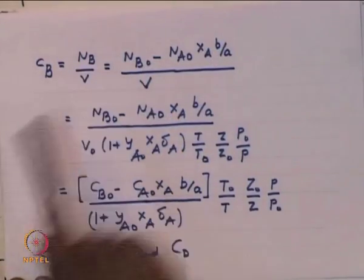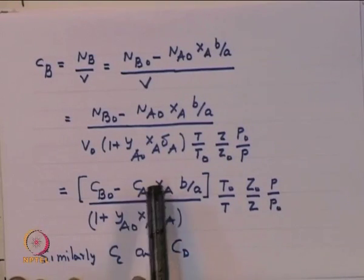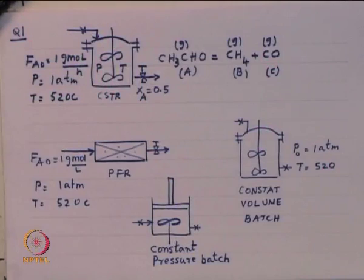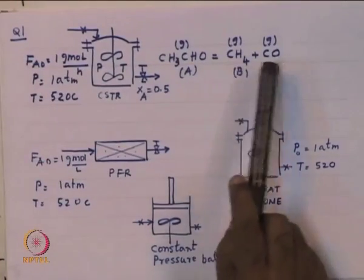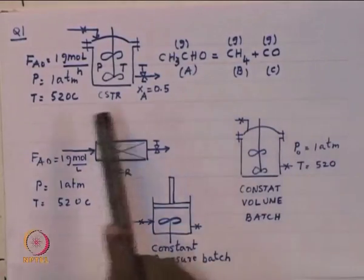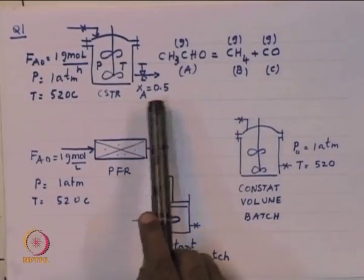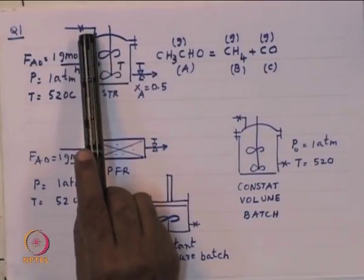We can now solve a specific problem. The reaction of interest is acetaldehyde (CH3CHO) undergoing thermal decomposition to give methane and carbon monoxide. This reaction takes place at 520°C and 1 atmospheric pressure. We want to conduct this reaction to X_A = 0.5, meaning 50% conversion. We can conduct this in a CSTR with continuous input and output, in a PFR, in a constant-volume batch reactor, or in a constant-pressure batch reactor with a movable piston that keeps pressure constant while volume changes.